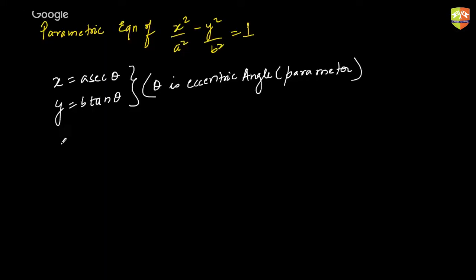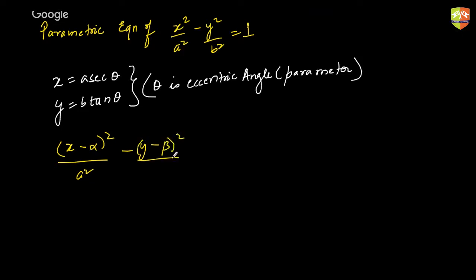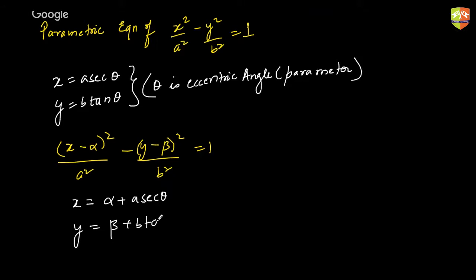For a shifted hyperbola (x−α)²/a² − (y−β)²/b² = 1, the parametric form is x = α + a·secθ and y = β + b·tanθ.